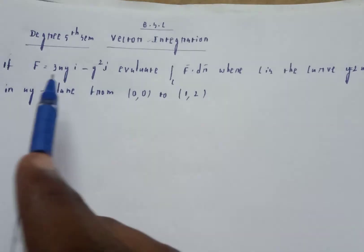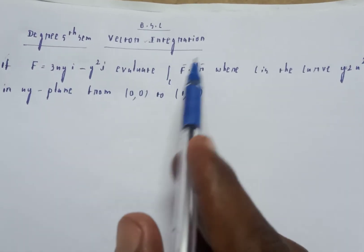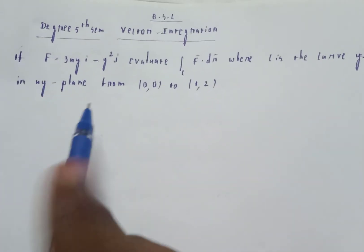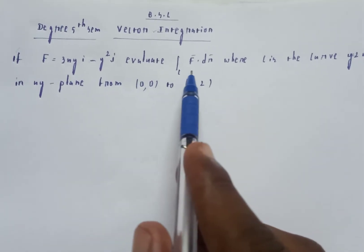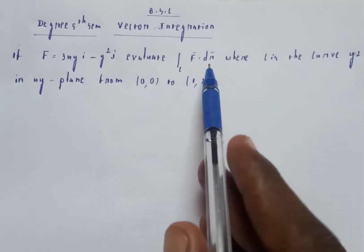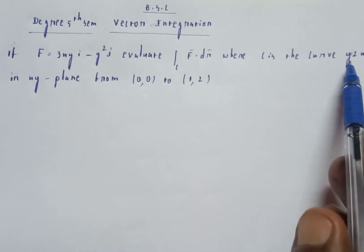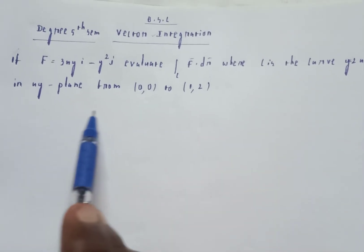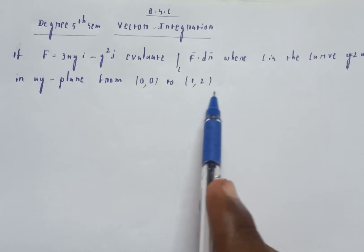Welcome to my channel PSE degree, fifth semester vector integration. If F is equal to 3xy i minus y square j, evaluate integral c F·dr where c is the curve y equal to 2x square in the xy plane from (0,0) to (1,2).